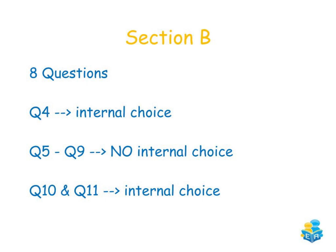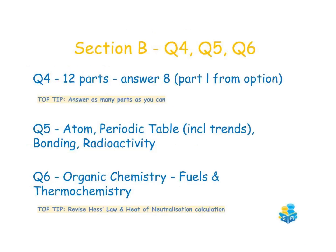Section B of the chemistry paper consists of eight questions. Question four has internal choice, questions five to nine do not have internal choice, and questions 10 and 11 do have internal choice. Question four consists of 12 parts of which you have to answer eight, so only eight parts of the 12 will be marked.